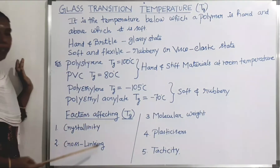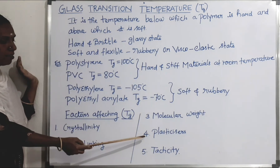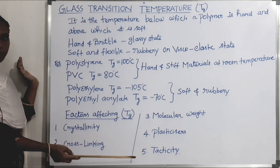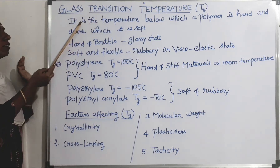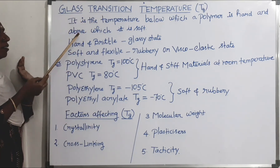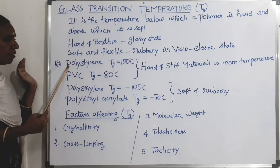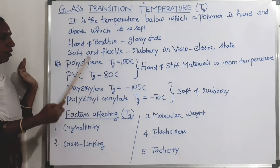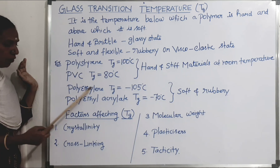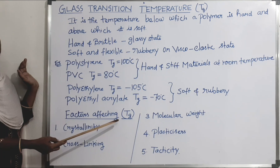Based on tacticity, the Tg value increases or decreases. These are the five factors affecting glass transition temperature: crystallinity, cross-linking, molecular weight, plasticizers, and tacticity. We have seen the concept, the two states — glassy and rubbery — the examples with Tg values for hard and soft polymers, and the five factors.